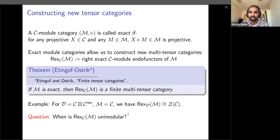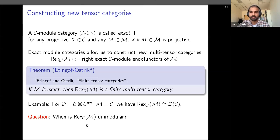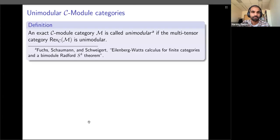We are interested in unimodular things because they connect to Frobenius algebras. The question is: given this way of constructing new tensor categories, when is the output unimodular? That is the content of my two papers. If we have a module category for which the category of endofunctors is unimodular, then we call it a unimodular module category — which was the title of my talk.